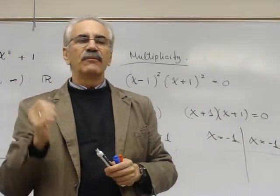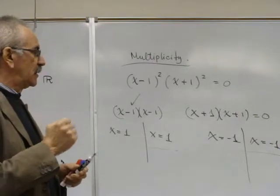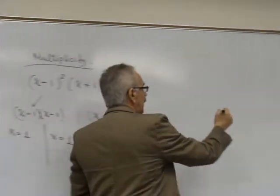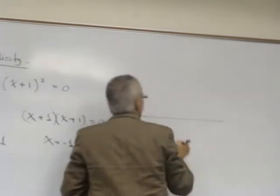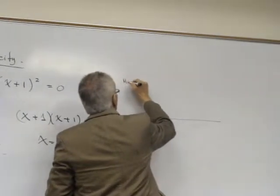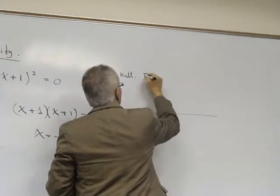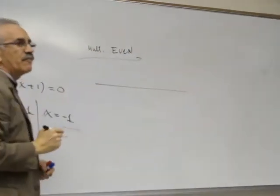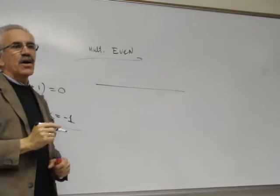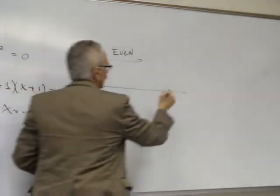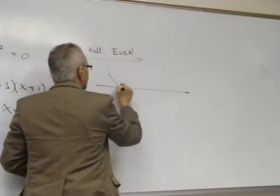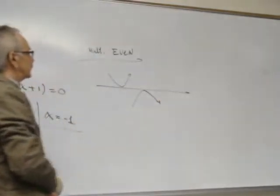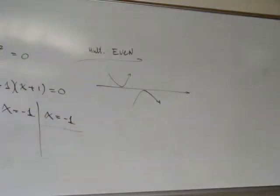What we can get from that property? Very interesting. Can I continue here? Very interesting. If the multiplicity is even number, the function never cross the axis x. The function reflects by this way or by this way.